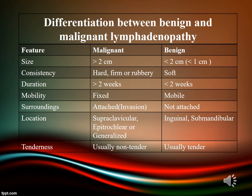Benign lymph nodes will be less than two centimeters, usually less than one centimeter, soft, of shorter duration, mobile, not attached to surrounding structures, usually in the inguinal and submandibular region, and infectious or benign lymph nodes are usually tender.